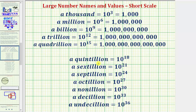A quintillion equals 10 raised to the power of 18, or 10 to the 18th. A sextillion equals 10 raised to the power of 21, or 10 to the 21st. A septillion equals 10 raised to the power of 24, or 10 to the 24th.